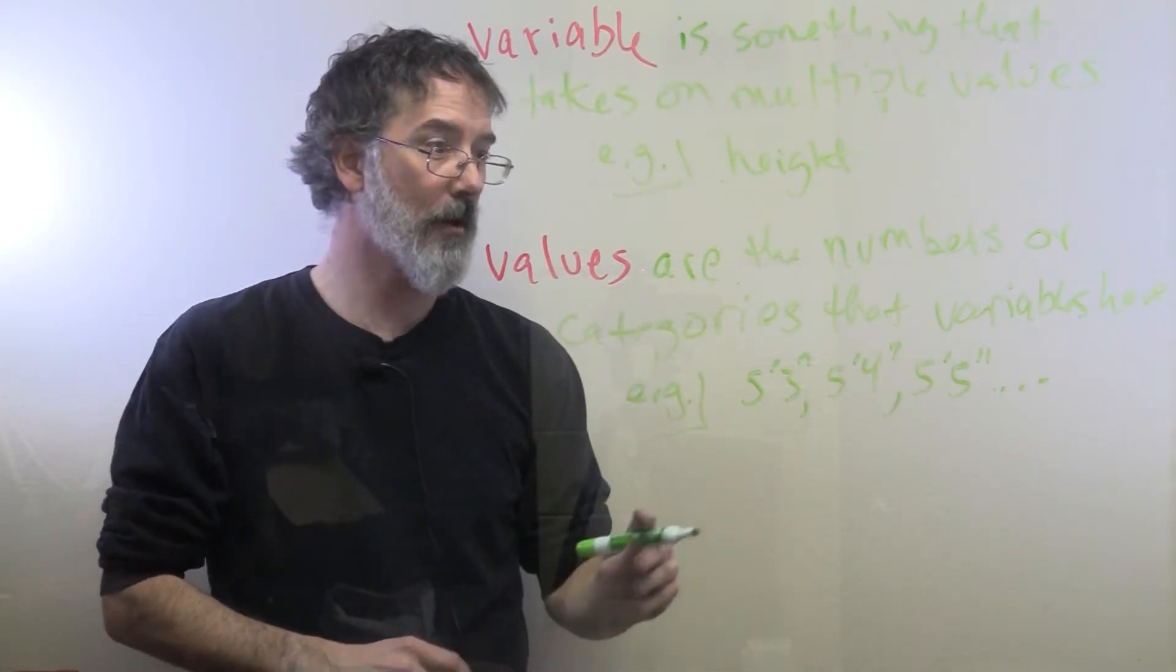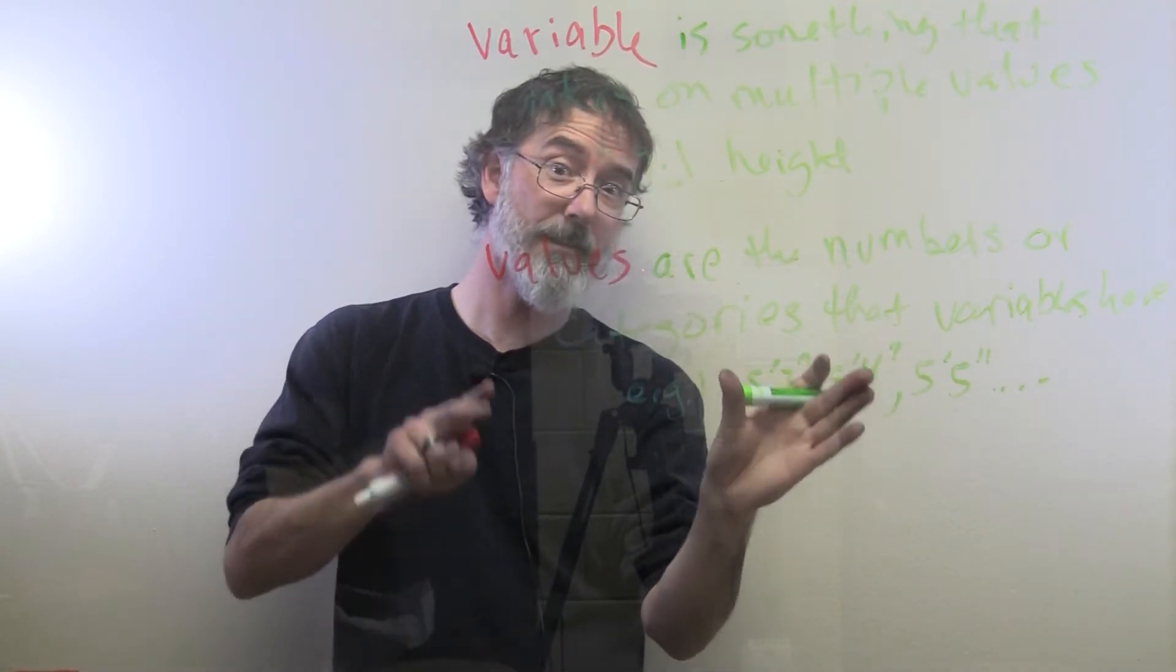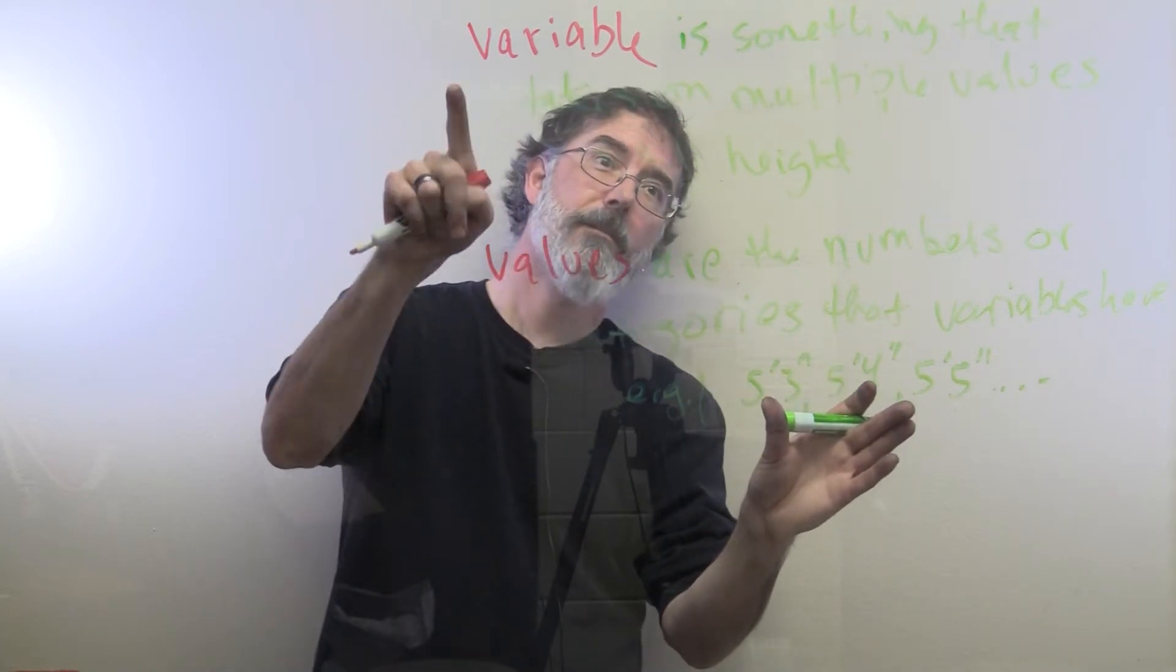Various values are possible, but you cannot be negative 3 feet high. That is not a possible value for the variable of height.